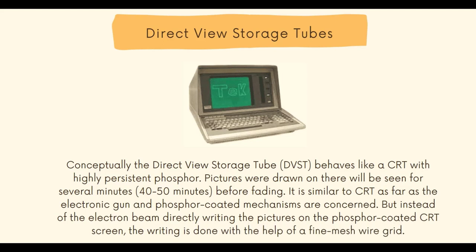Direct View Storage Tubes — that's DVST. The DVST display devices are similar to CRT devices, but the difference is that the image displayed on the screen first gets stored into a storage grid, a layer behind the screen. That's why it's called DVST — it directly stores the view. The picture drawn on the screen will be seen for several minutes, usually 40 to 50 minutes, before fading, and due to this, DVST does not require any refreshing.